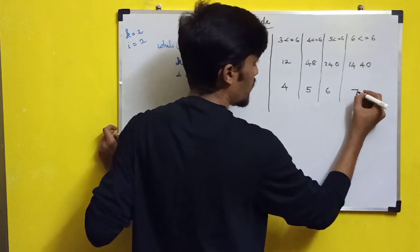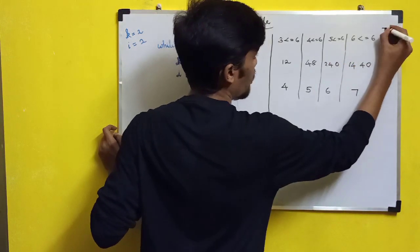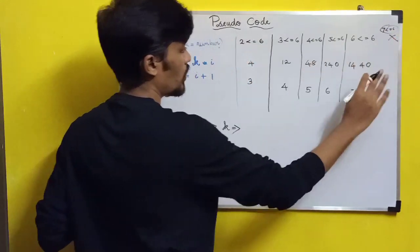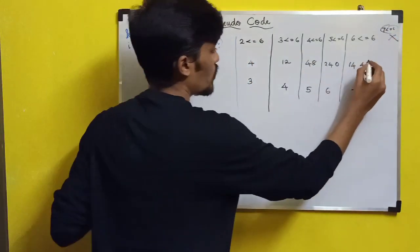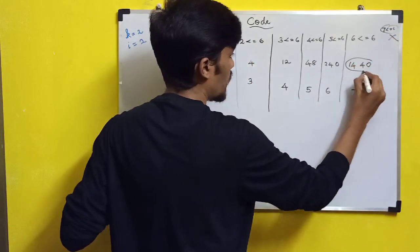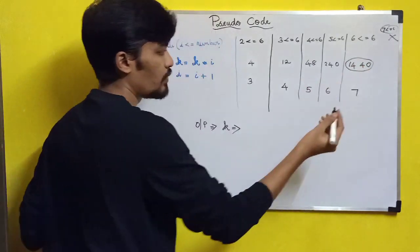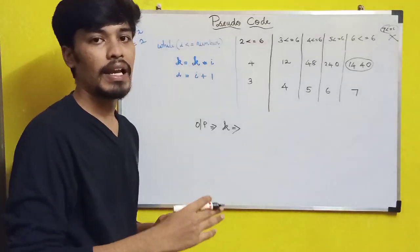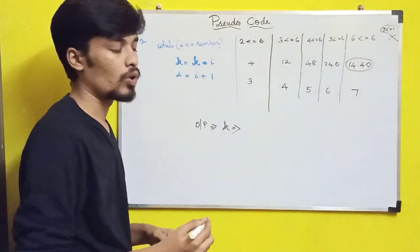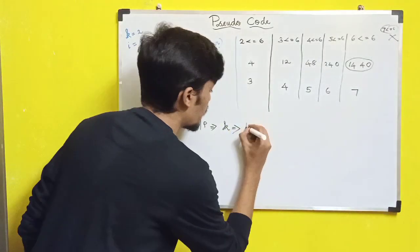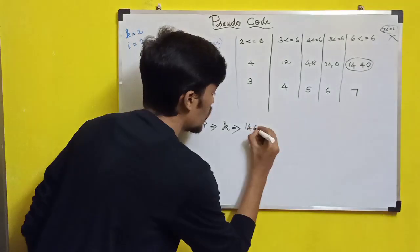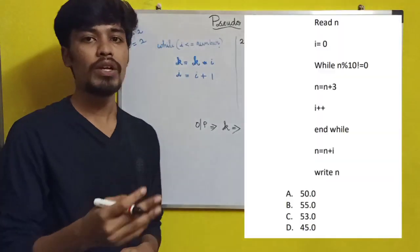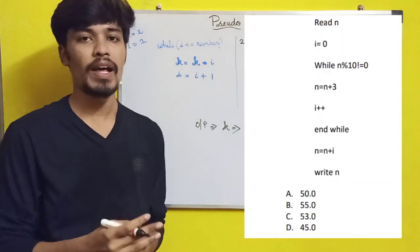I value becomes 7. 7 is less than or equal to 6 — condition is not satisfied. So K value is 1440. The answer is 1440.0. So for this while-loop question you can answer it. That question is displayed and that answer is mentioned.